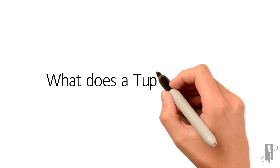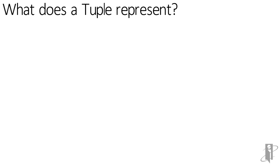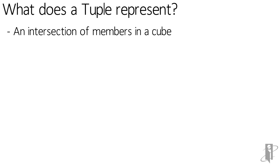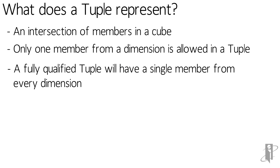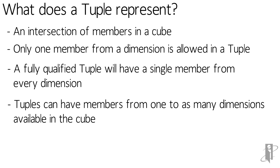So what is a tuple and what does it represent? Well, a tuple is an intersection of members within the cube. It's kind of like a cross-dimensional operator in the calc script language, if you're familiar with that. Only one member from a dimension is allowed in a tuple, so if I had January and February in the same dimension, they can't be in the same tuple — I can only have a single member. A fully qualified tuple will have a single member from every dimension within the cube. Tuples can have members from anywhere from one to as many dimensions as there are in the cube.